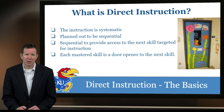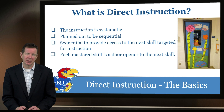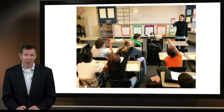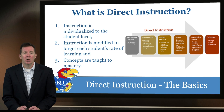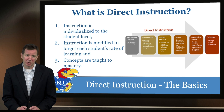Direct instruction is very much an explicit instruction component — it's systematic and sequential. The individual understands the steps, the sequence, and what's expected from both our perspective and theirs. As you can see from this visual, it's very much guided by us, the instructor, where the student is the recipient. After the modeling, they can then do it themselves. Direct instruction, as I've been mentioning, is individualized to the student.